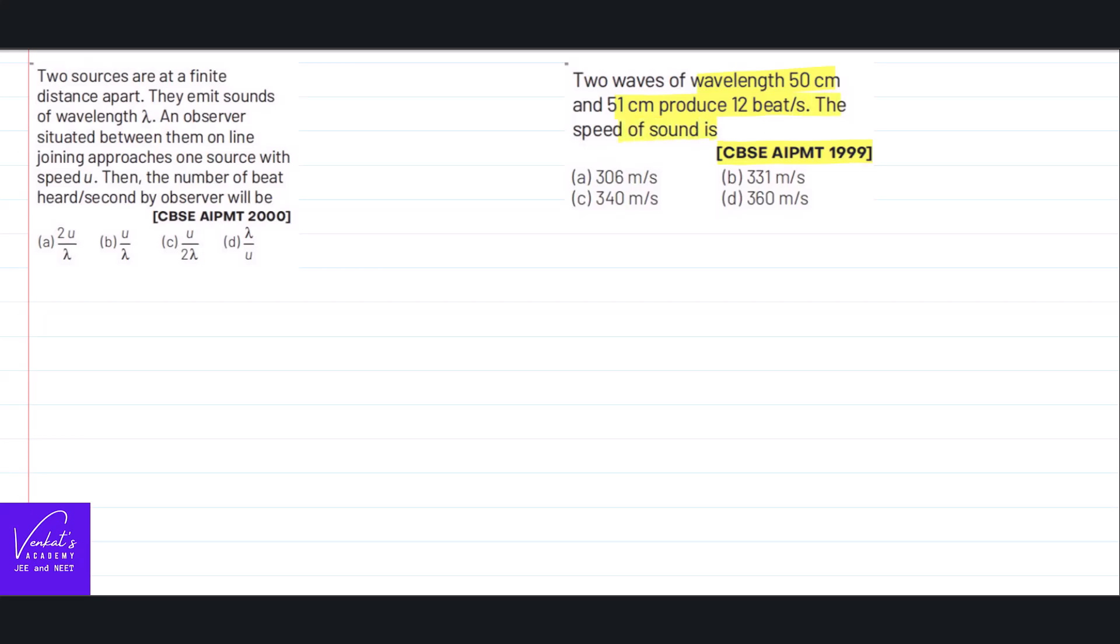So we can write a formula first of all that number of the beats per second is difference between the frequencies n, whereas v equals n lambda, n equals v by lambda. So what we can say is v by lambda 1 minus v by lambda 2 in the place of n1 and n2.